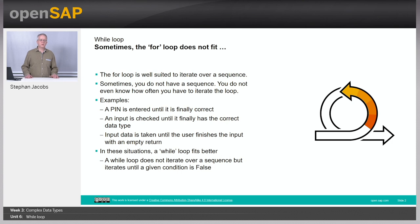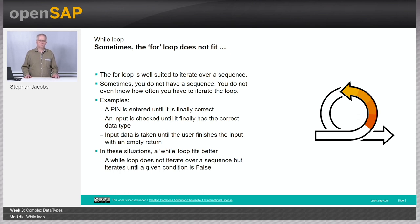For loops are well suited if you have a sequence like a list or a tuple. However, sometimes you would like to loop — you would like to re-run the same statements — but you do not have a sequence. Maybe you do not even know how often you would like to loop.